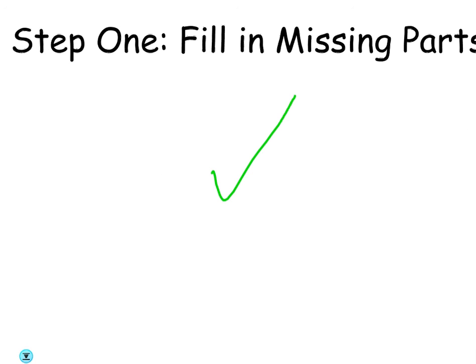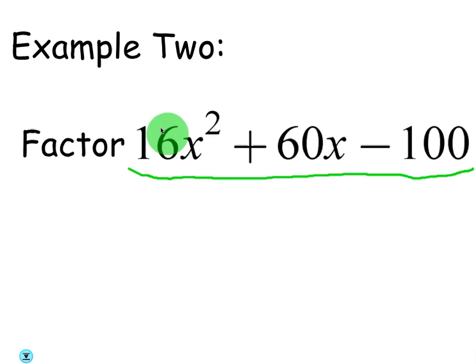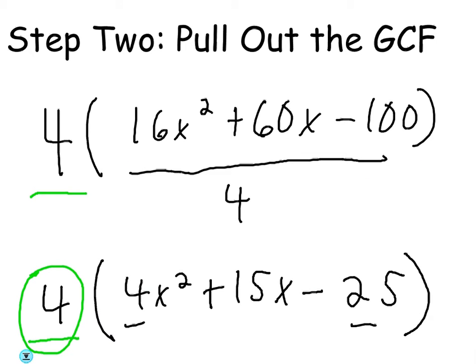Again, if there is a missing coefficient, you can fill it in, but there aren't, so we do have a, b, and c, so we're good. Okay, but the next step does apply in this case. So what you want to do is pull a 4 out of these three terms. You're left with 4x squared plus 15x minus 25, no problem.